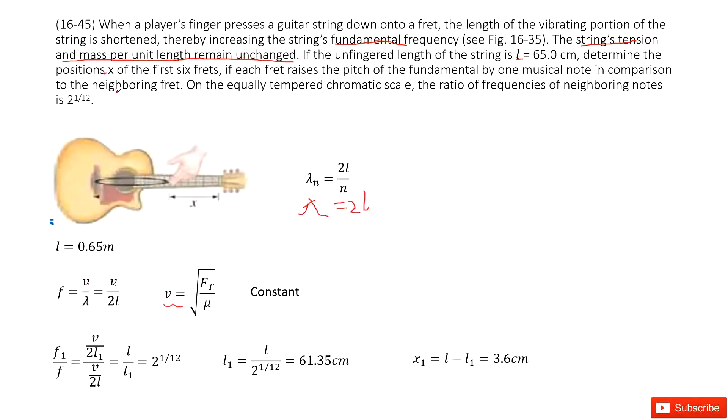Now how can you decide x1, the first fret? It tells you that on the equal tempered chromatic scale, the ratio of frequency for neighboring notes is this number. This is what is given. So it looks like we can decide the frequency ratio at first.